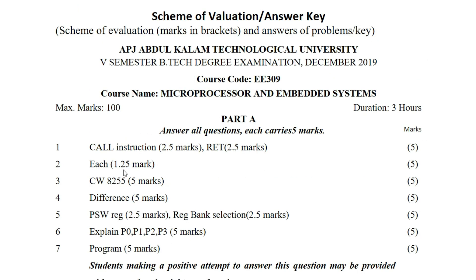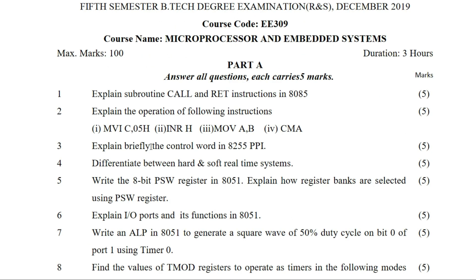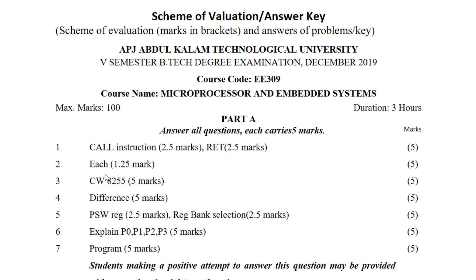This is worth 1.25 marks. This is how we explain the control word of the 8255 PPI. Next: briefly explain the control word of the 8255 PPI. Module 3 covers the detail and architecture, including different types of modes. We will explain the control word of the 8255 PPI.